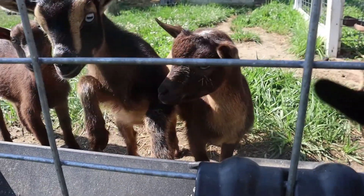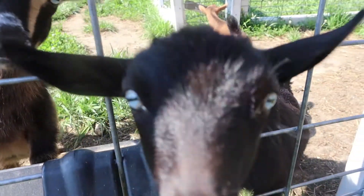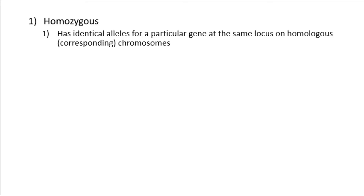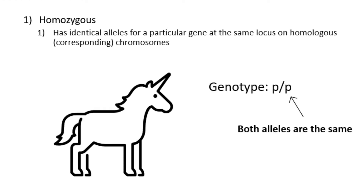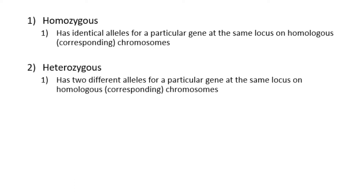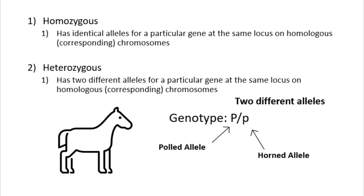Before we continue, I want to go over a few quick terms. The first is homozygous — a goat is homozygous for a trait if it has identical alleles at a particular gene locus on homologous chromosomes. For example, for a goat to be horned, it must be homozygous for the horned allele. The next term is heterozygous, which means the goat has two different alleles for the same gene. For example, a goat that is heterozygous for the polled trait has one horned allele and one polled allele.